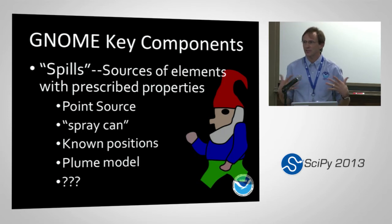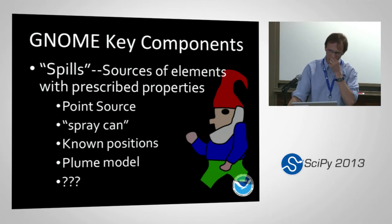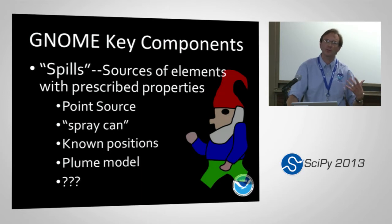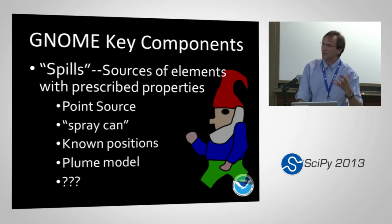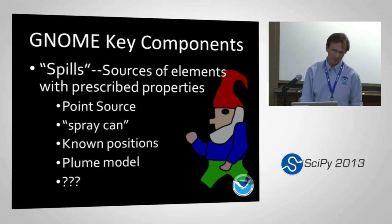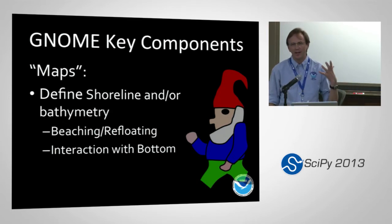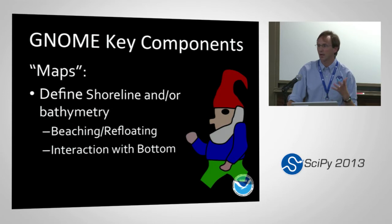We also have spills — a spill is essentially just a source of particles. That could be a point source; in our graphical interface there's a spray can tool where you spray in where the particles are based on observations. Or if you know where particles are, you can place them directly. A plume model would be a source of particles for a 3D spill. And then we have maps — a map defines the shoreline and/or bathymetry for 3D models and handles how the particles interact with the shoreline or bottom.